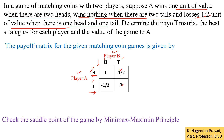Next we check the saddle point of the game by the minimax and maximin principle. First, the maximin principle: make a row minimum heading and select the minimum value row-wise. Here minus one-half is the minimum value for the first row, and minus one-half is the minimum value for the second row. Then select the maximum among these minimums — minus one-half is the maximum — so we enclose it with a rectangle. This is the maximin value.